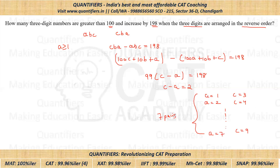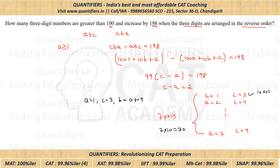Now many students marked the answer as 7 — but mind you, 7 is not the answer. For example, when A is 1 and C is 3, B can take any value from 0 to 9. So there are 10 solutions for each pair. Since there are 7 pairs, the final answer is 7 × 10 = 70 total solutions.